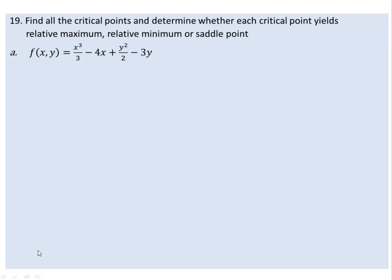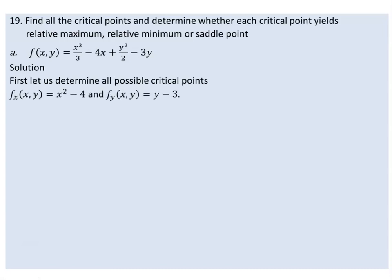Find all critical points and determine whether each critical point yields a relative maximum or relative minimum. The solution goes like this: first we have to determine all possible critical points, which are found by taking the partial derivative with respect to x and y.